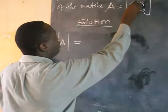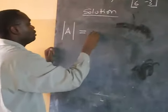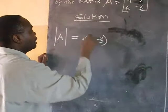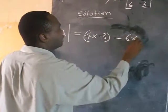we are going to multiply the numbers: 4 times negative 3, then we take away 6 times 3.